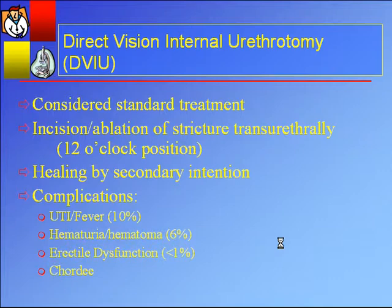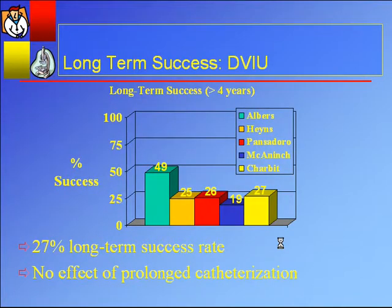Complications: about 10% of people will have some sort of infection or fever after the procedure, 6% will have sloughing and hematoma, and about 1% — less than 1% — can have a theoretical risk of erectile dysfunction. The long-term success of DVIU, looking at five series with long-term follow-up and pooled averages, is about 27% for a 2-centimeter or less bulbous urethral stricture. This isn't obviously an ideal procedure and a lot of patients will relapse and require further treatment. Several studies have shown that prolonged catheterization — anywhere from 24 hours to 7 days — doesn't affect the stricture outcome.